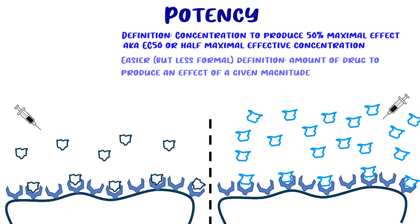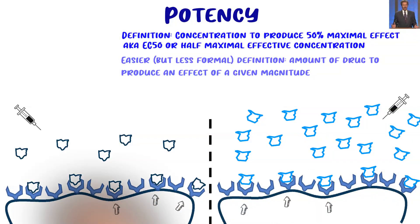Before discussing these different drugs, think to yourself: which of these two drugs has the higher potency and why? The answer is the drug on the left has higher potency. We can see that both drugs hit the exact same number of receptors, but the drug on the right required a much higher dosage or concentration to hit that same number of receptors — we can see this because there's more of that drug floating around near the nerve cell.